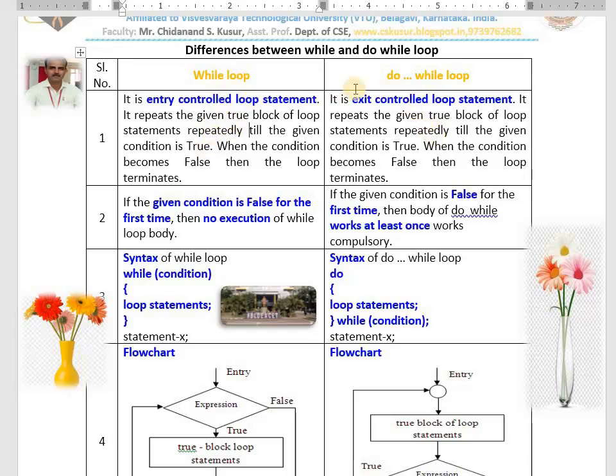First difference is all about explanation. Major difference you have to write: if the condition is false for first time, while will not work. Condition is false for first time, then do-while works at least once compulsory.